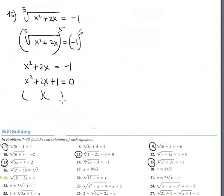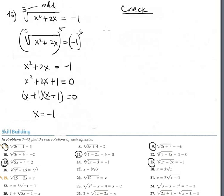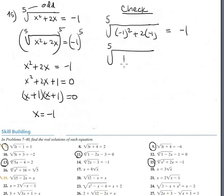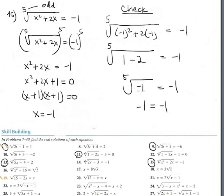This is a perfect square trinomial, so the solution is x equals negative 1. Checking is not strictly necessary since the index is odd, but let's verify: the 5th root of (negative 1 squared plus 2 times negative 1) should equal negative 1. That's the 5th root of (1 minus 2), which is the 5th root of negative 1, which equals negative 1. Negative 1 equals negative 1 — the answer is confirmed.